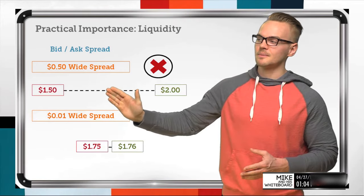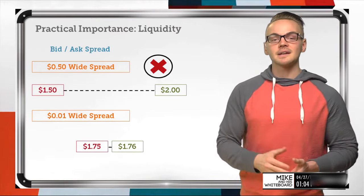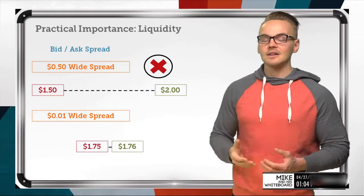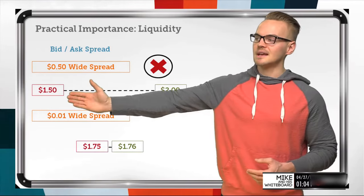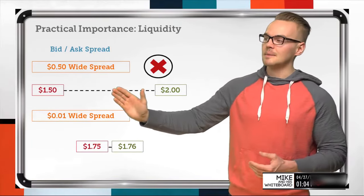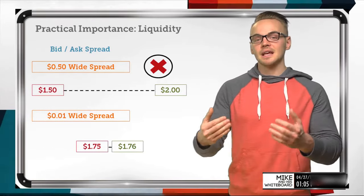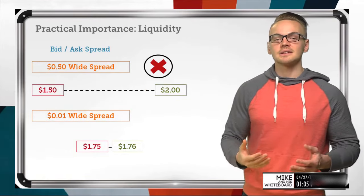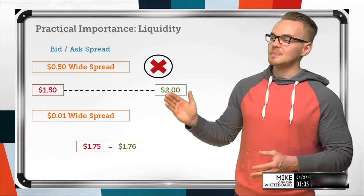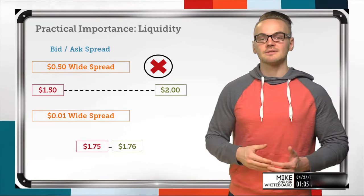The mid price is simply the midpoint between the bid and ask — around $1.75 in this example. If I'm dealing in a higher-priced underlying like SPX, which has wider spreads but is very liquid, I can route my opening order at $1.75 and probably get filled. If I want to get out later and nothing has changed, I can route the closing order for $1.75 as long as that strike is still liquid.